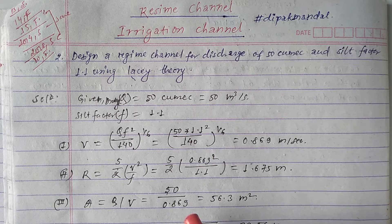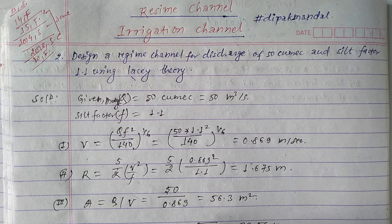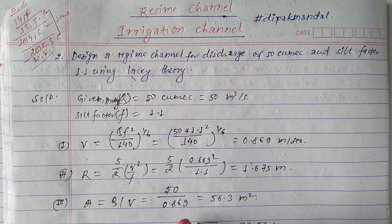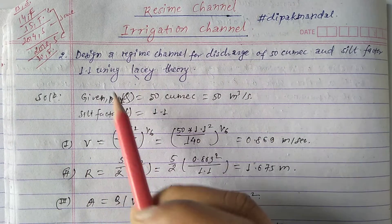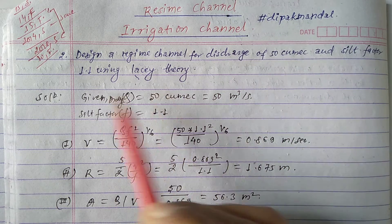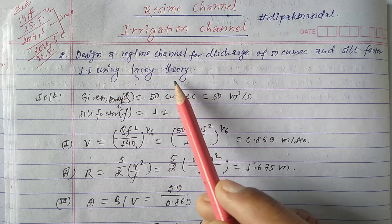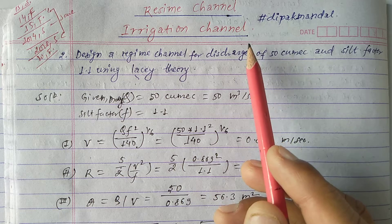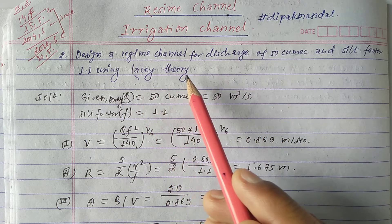Hello everyone. In this video we are going to solve a numerical related to the irrigation channel — specifically a regime channel. The question is: design a regime channel for a discharge of 50 cumec and shield factor 1.1 using Lacey's theory. We have to design our regime channel using the formula of Lacey's theory.